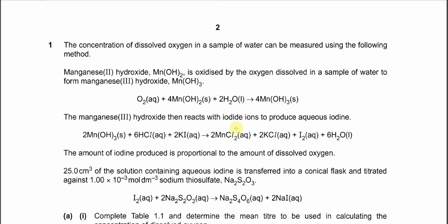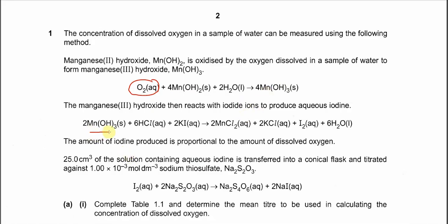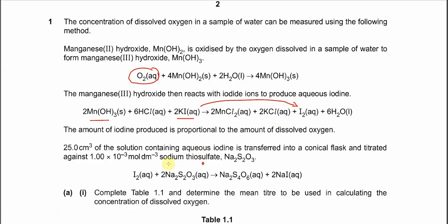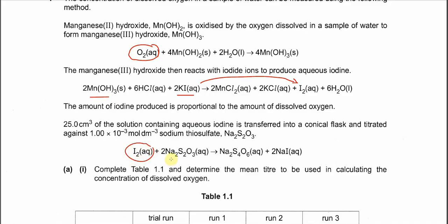Question 1 involves the oxidation of manganese hydroxide using oxygen. Oxygen reacts with manganese(II) hydroxide, oxidizing manganese(II) to manganese(III). The manganese(III) hydroxide formed then reacts with potassium iodide, oxidizing it to iodine. We then titrate the iodine produced with sodium thiosulfate to get the concentration of dissolved oxygen.